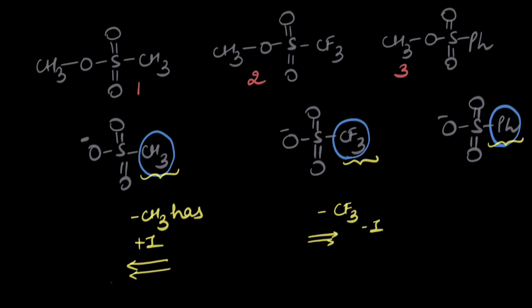When we are talking about stabilizing an anion, we see that the anion stabilizes when it is attached to an electron-withdrawing group that takes away electron density from it.